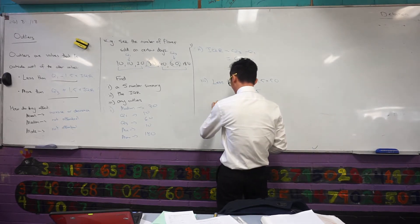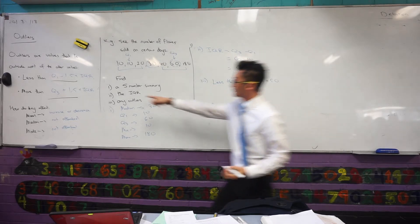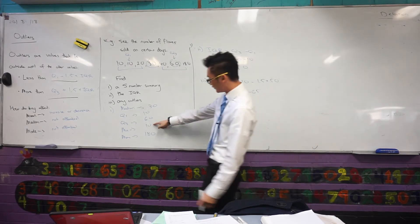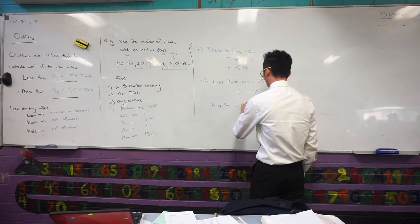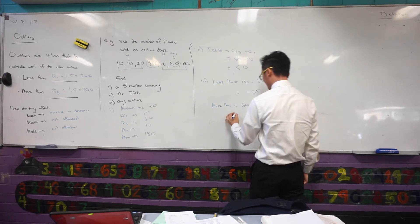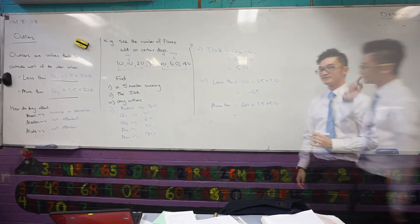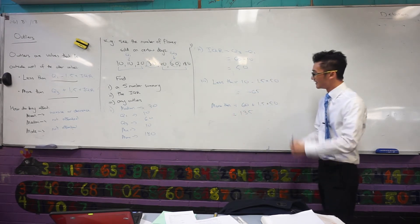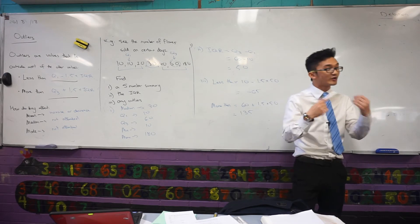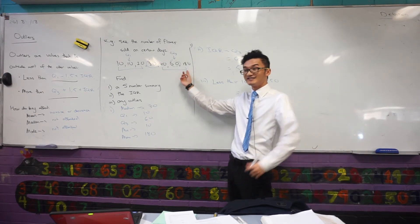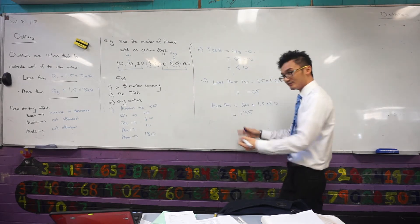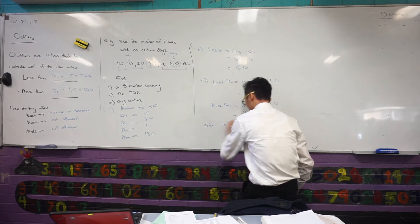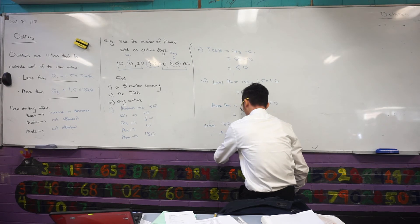What about the more than one though? For more than, I want to use this formula now. I want to see Q3 plus 1.5 times this value. So my Q3 value was 60 plus 1.5 times 50. What's that going to be? 135. So if I have any values that are more than 135, that's when I classify them as an outlier. And very clearly here, you can see 180 is greater than that. So I'll just make a little statement there. Since 180 is greater than 135, therefore it is an outlier.